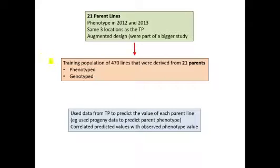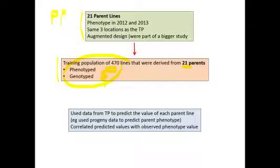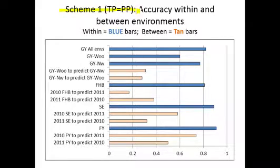Here's the layout of how we assessed the effectiveness of genomic selection. The 470 lines were phenotyped and genotyped to generate the GS model. These 470 lines are derived from 21 parents, which were also phenotyped in independent studies across different sets of environments to serve as our prediction population. So we used the progeny of those 21 parents to build the training model, and then tested whether that model could predict the value of the 21 parents. Within environments, our GS accuracy was actually pretty good, though it was much lower when building the model from one environment to predict values in a different environment, as would be expected due to G-by-E patterns.